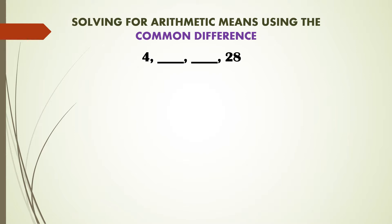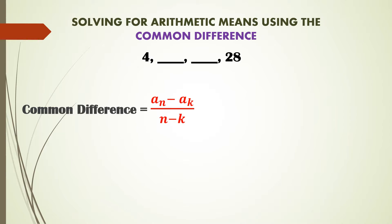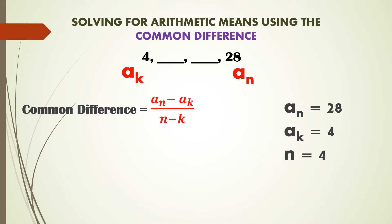To find the common difference, we use the formula: d = (aₙ − aₖ) / (n − k), where aₙ and aₖ are the two given terms, and n and k are their respective positions. For this example, I assign aₙ = 28 (the fourth term, so n = 4) and aₖ = 4 (the first term, so k = 1).